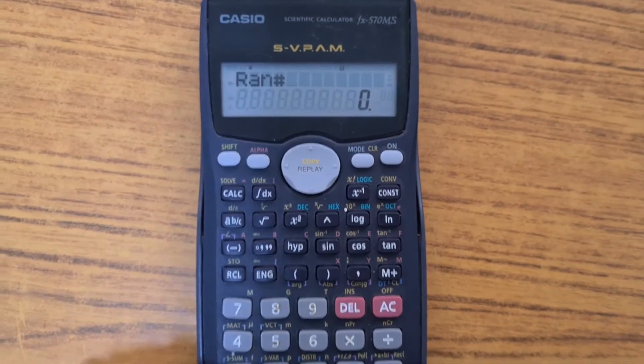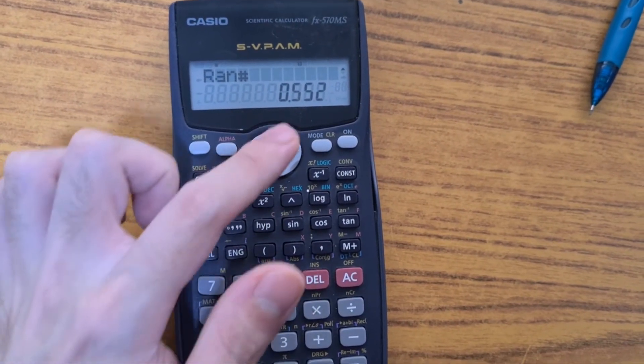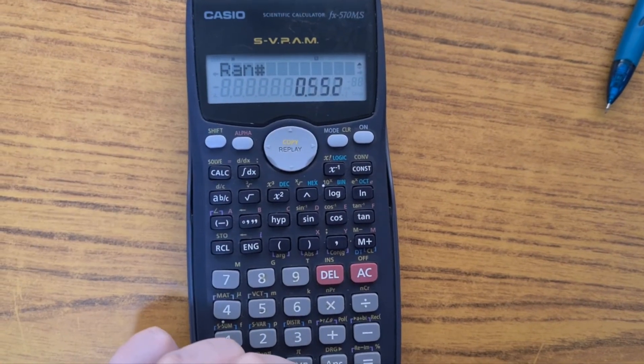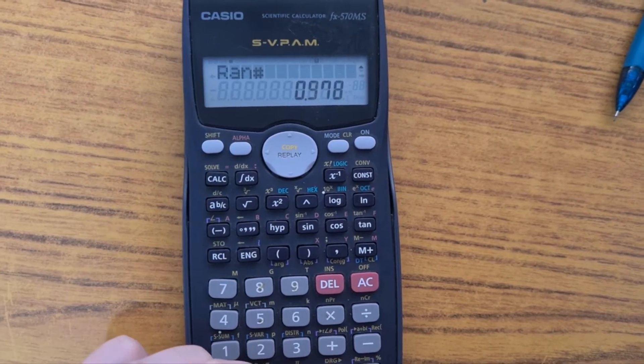After which, when you press equal, you will get a random number between 0 and 1, excluding 1.